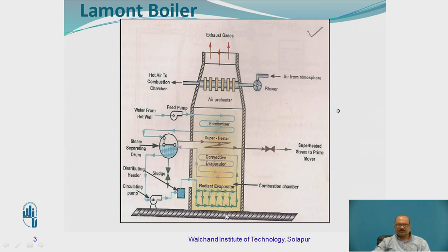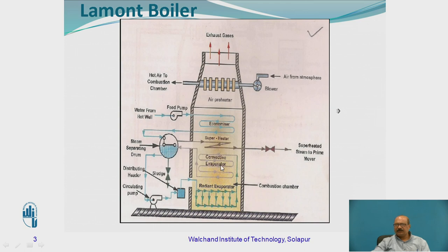So here the burning portion is going to take place — the firing is going to take place, and in this one we are going to burn the fuel. There are parts 1, 2, 3, and 4, and then it goes to the exhaust. Whatever fuel burning takes place in this particular chamber — here it is represented as the radiant evaporator and this one as the convective evaporator.